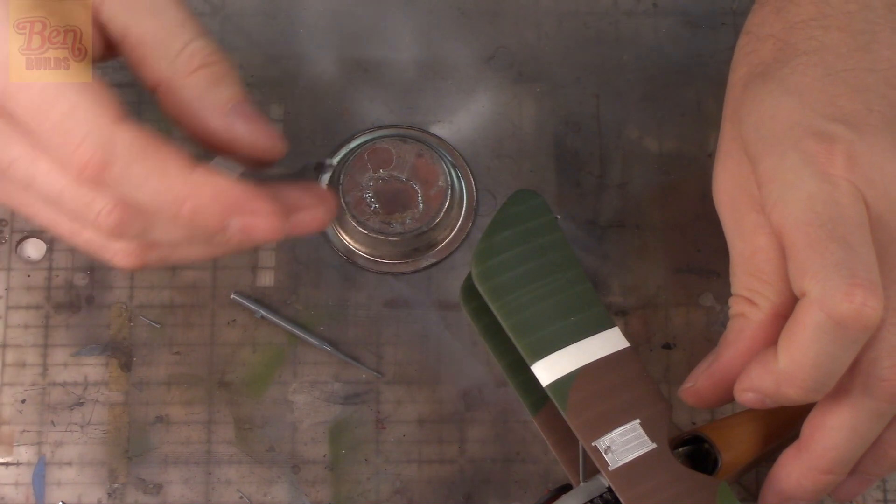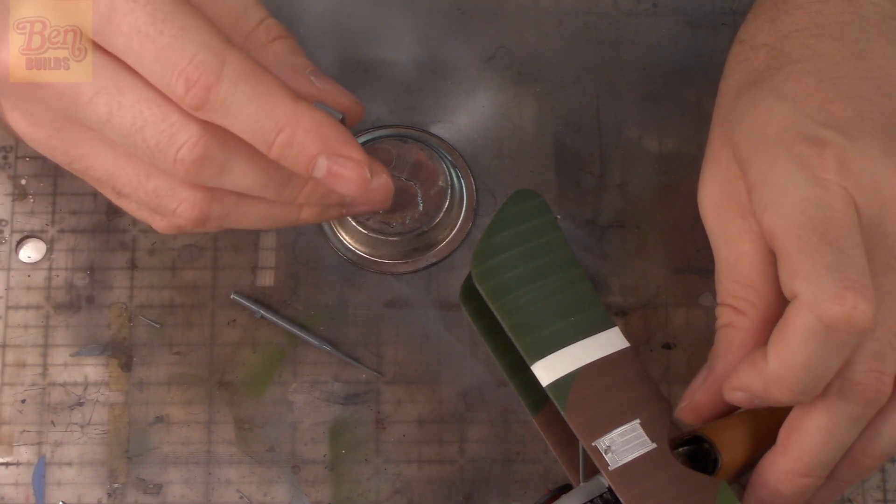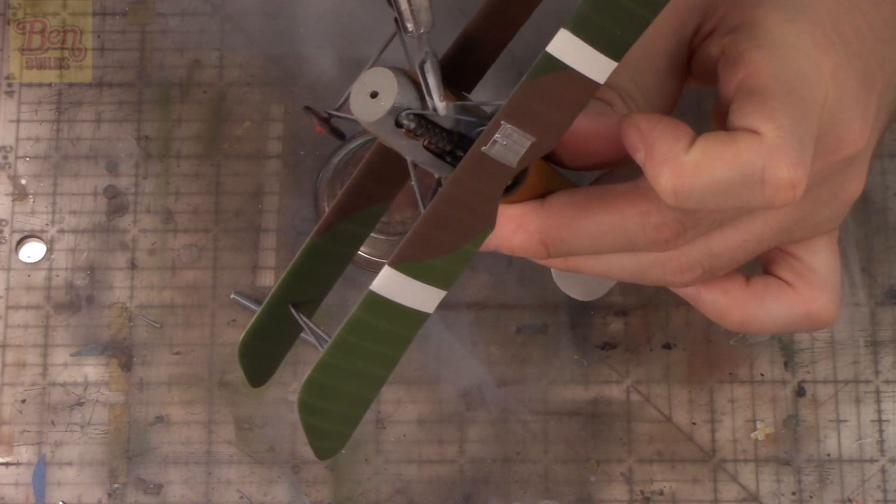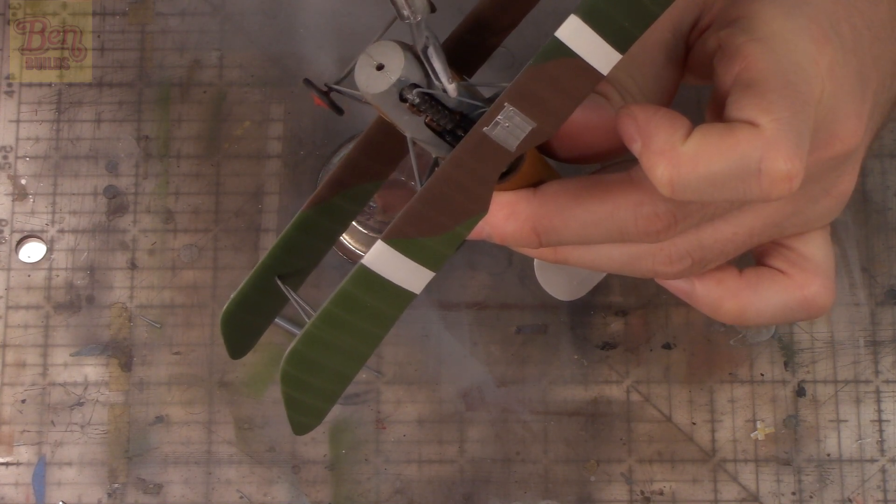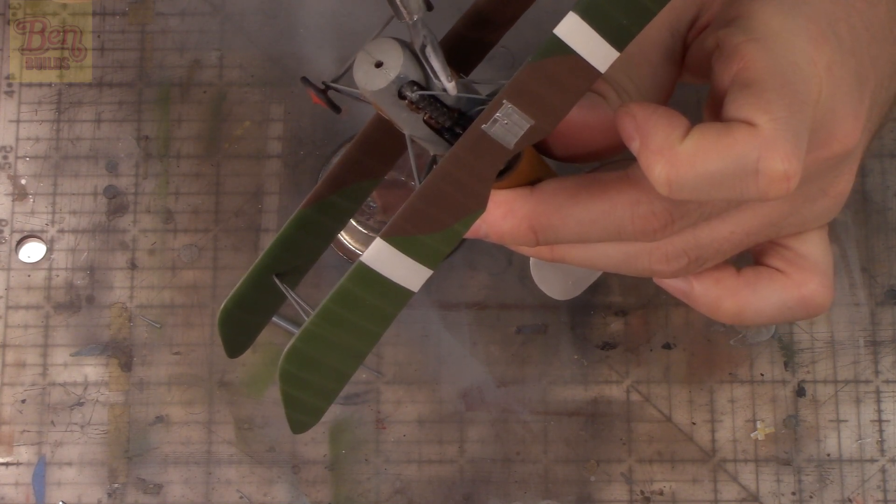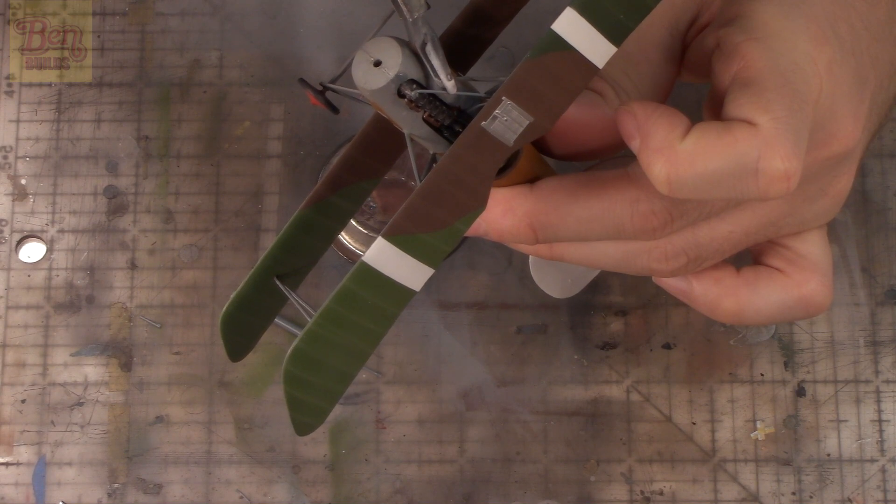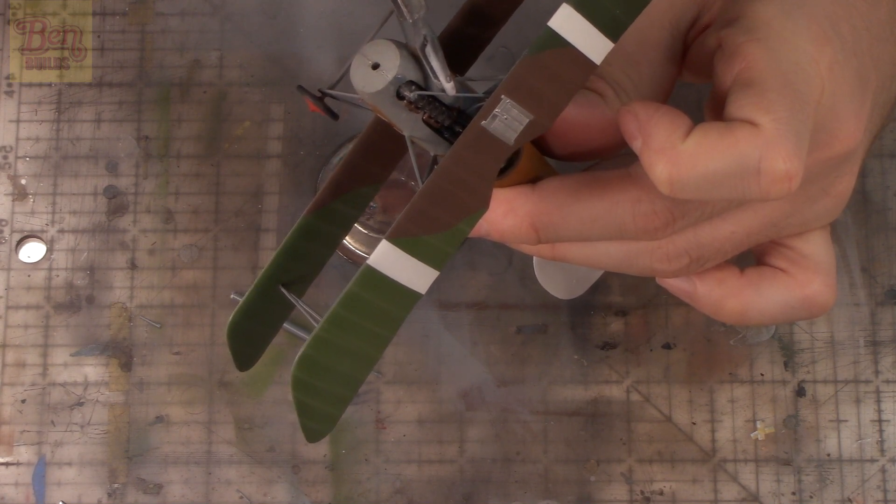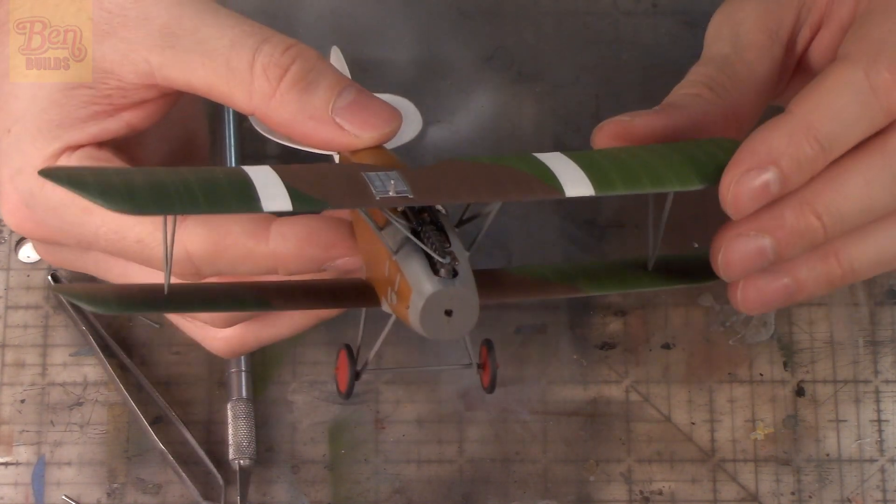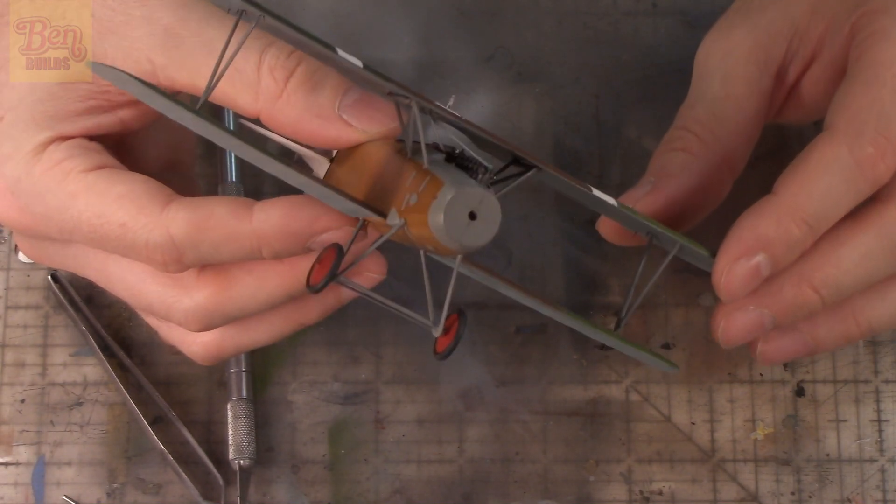I'm going to grab this with my tweezers, dip it into super glue, then attach it. I'll position this in the front of the engine, hooking that in place, then bending the back into that locating pin. Nice. We are pretty much ready to let this sit and dry.